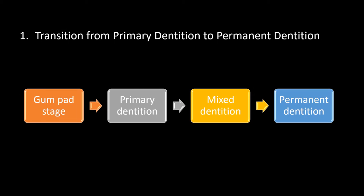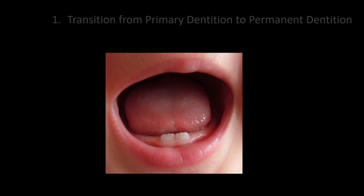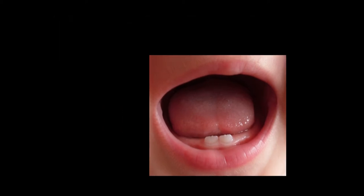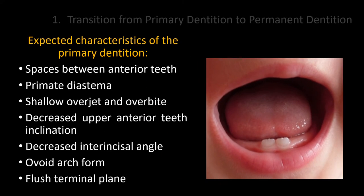The evolution of the occlusion. The deciduous or primary dentition starts around six months following birth. The lower primary incisors are usually the first to erupt, and by two and a half years of age, the primary dentition is generally complete and in full function.